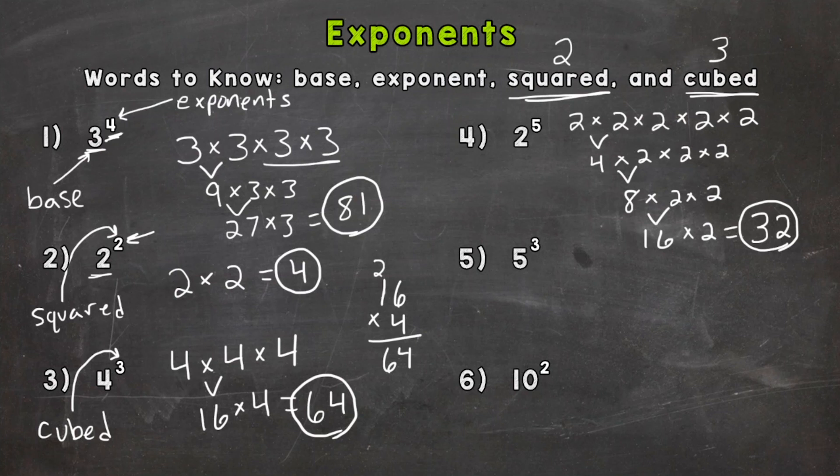All right, number five. We have five cubed. So we need to expand the five out three times. So we have five times five times five. Five times five is 25. Bring down the other five. So we end up with 25 times five, which is 125.